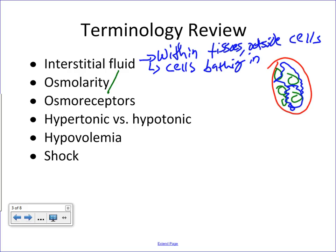Osmolarity and osmolality are similar terms. Osmolarity is a measure of solutes per liter of fluid, whereas osmolality is a measure of solutes per kilogram of fluid. When talking about concentrations of solutes in body fluids, these terms are so closely related that they are often used interchangeably. I'm going to say osmolarity throughout this presentation.